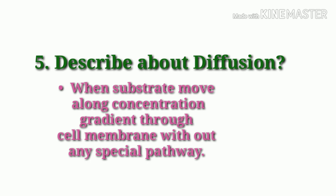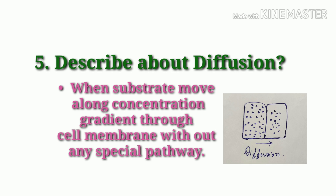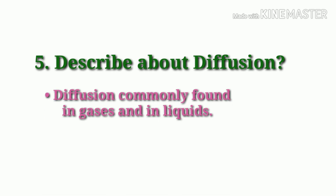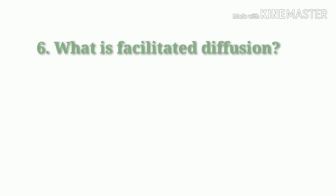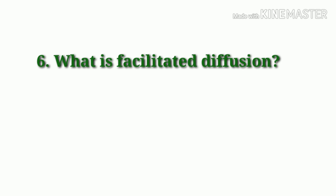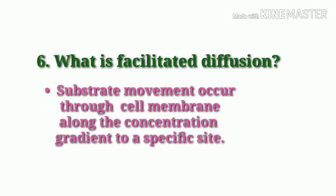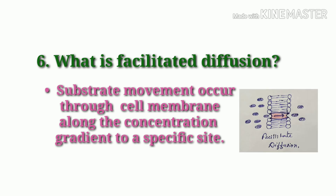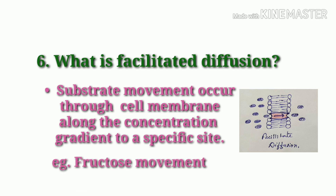Describe diffusion. When a substrate moves along the concentration gradient through the cell membrane without any special pathway, that is diffusion. Diffusion is commonly found in gases and liquids. What is facilitated diffusion? Substrate movement occurs through the cell membrane along the concentration gradient to a specific site. Example: fructose movement.